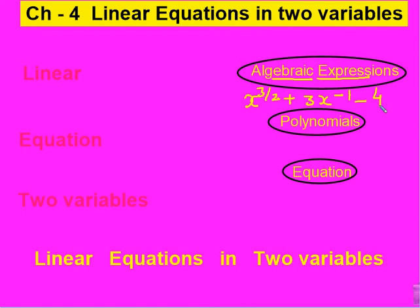और जब हम इस variable की power को थोड़ा और सुन्दर बना देते हैं — means whole numbers में कर देते हैं — तो ये polynomial बन जाता है, like x raised to the power 3 plus 3x minus 4. यह हमने अपने previous chapter में पढ़ा था, कि polynomials हम कैसे form करते हैं।